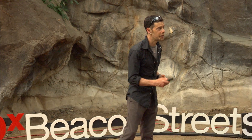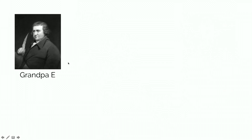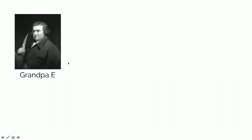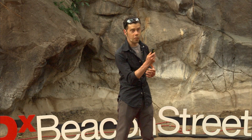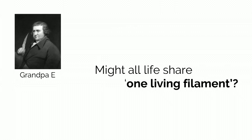Now Darwin himself, if we look in his family tree, had a really interesting forebear. He might have come to this talk with his grandfather, whose name was Erasmus. Erasmus was a naturalist himself, so there were his ideas in the air in Darwin's time. When he talked with his grandfather, his grandfather might have floated one of these ideas. His idea was that all life might share what he called one living filament.